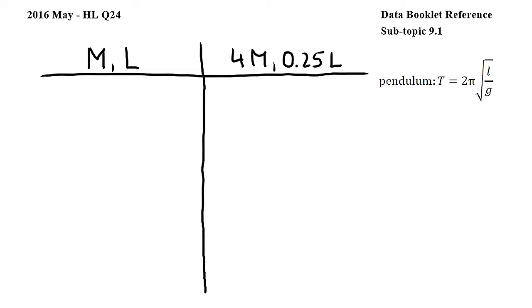In this question the mass of a pendulum is changed from m to 4m and its length is changed from l to 0.25l and we have to decide what happens to its period.